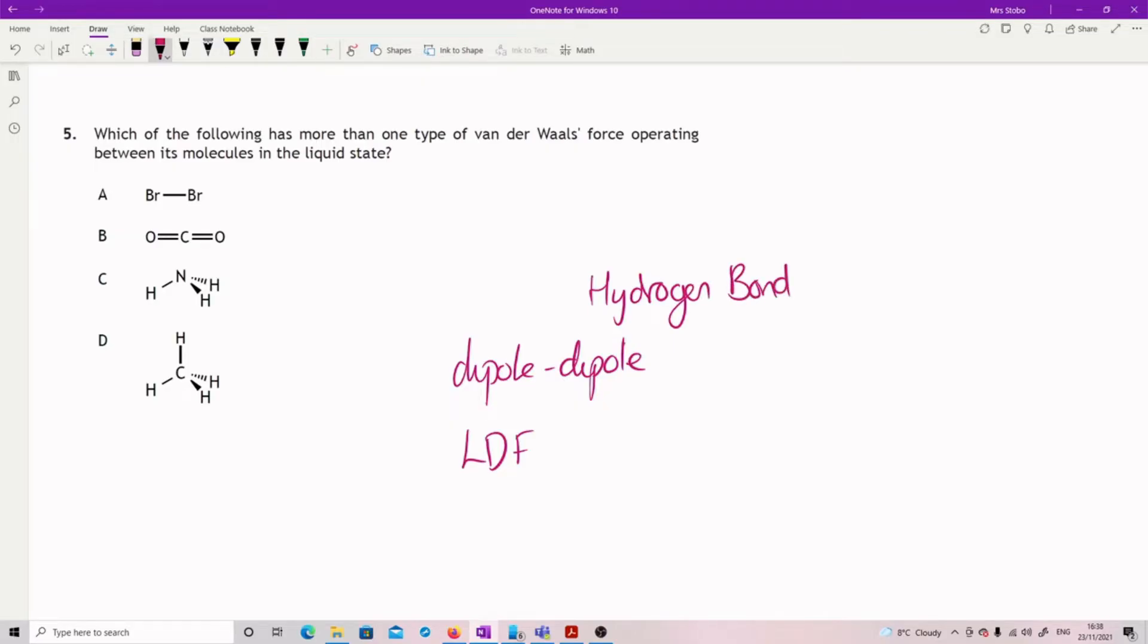So bromine, the only thing that's going to happen is we're going to have London dispersion. In this one we've got a dipole set up but then it's non-polar, so we're looking again at just LDFs.